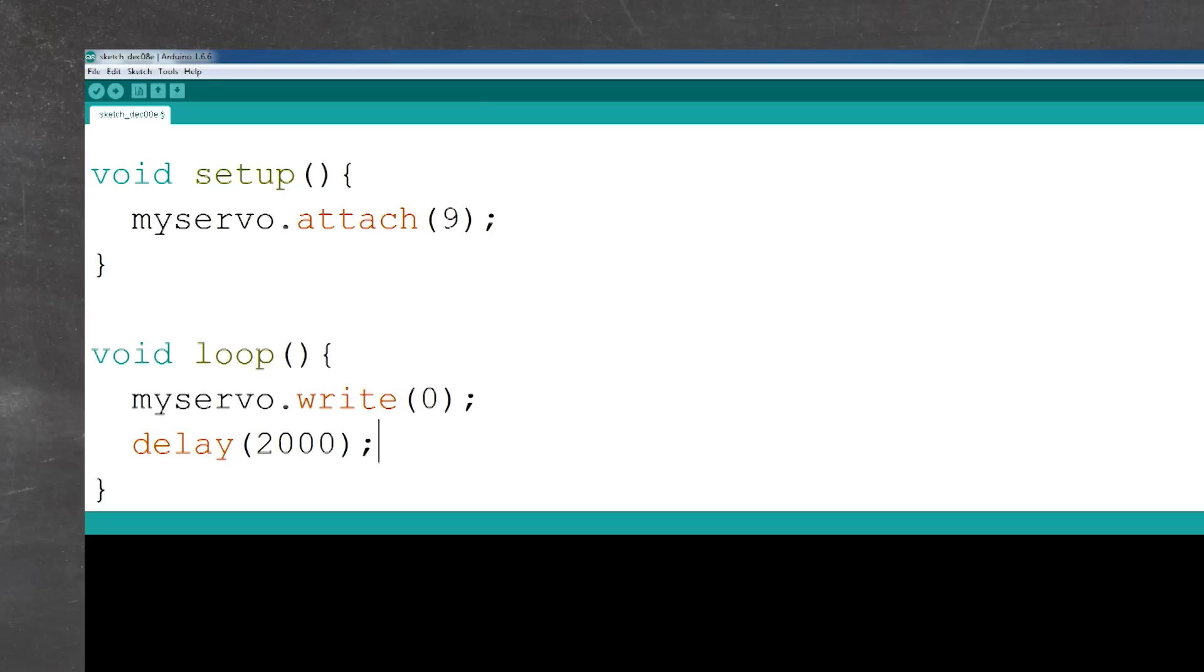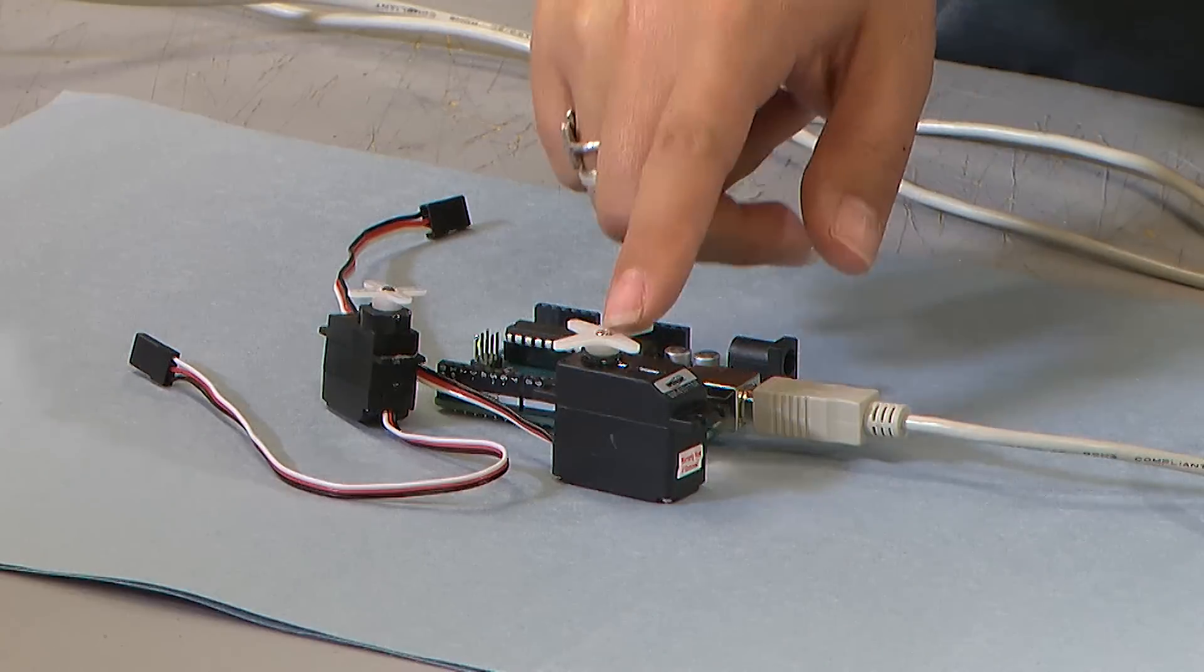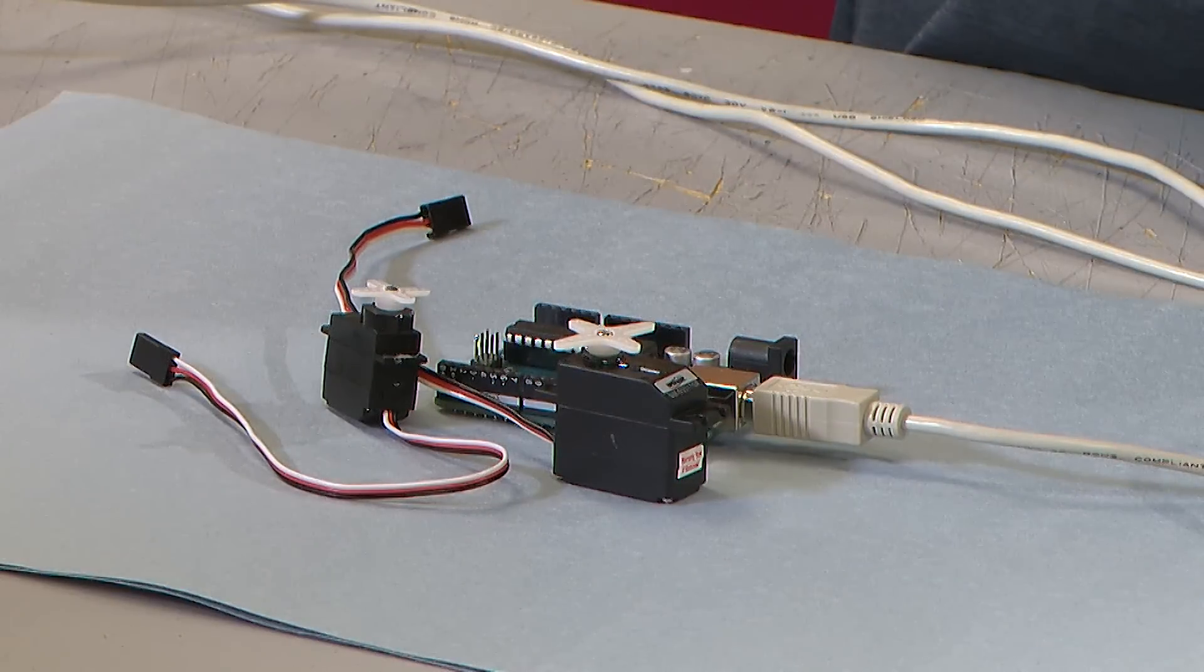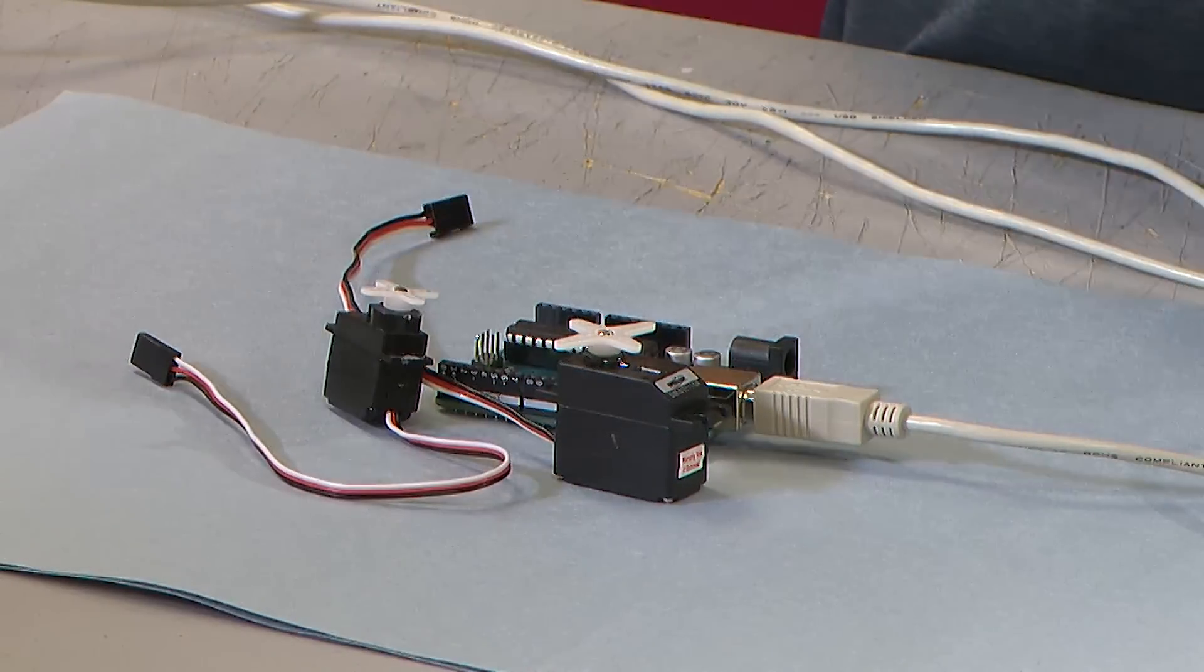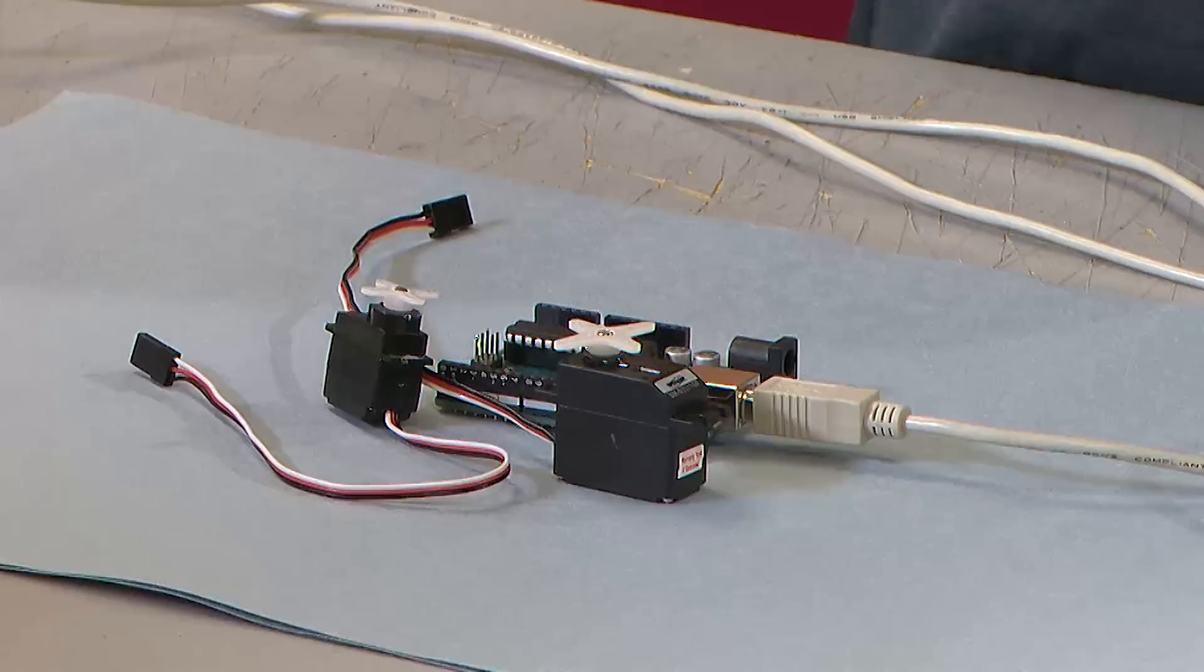This means for the big servo, it'll spin to the left really fast for 2 seconds. For the small servo, it'll go to position 0 degrees for 2 seconds.